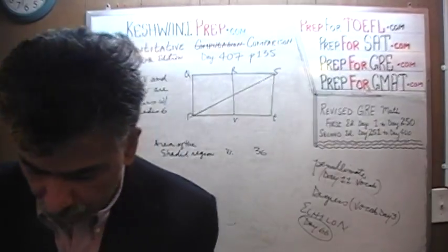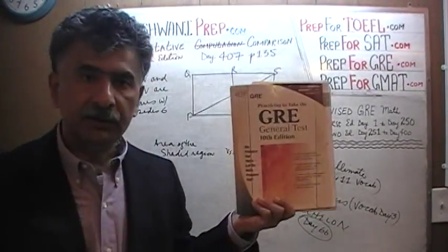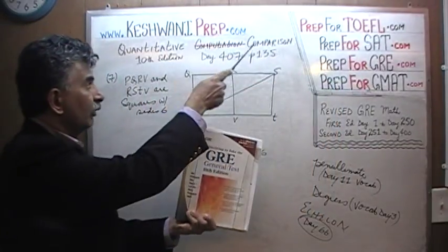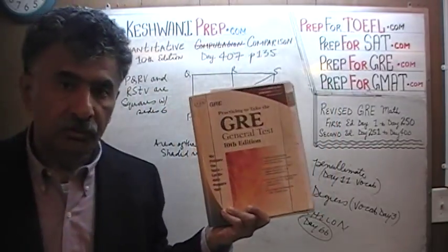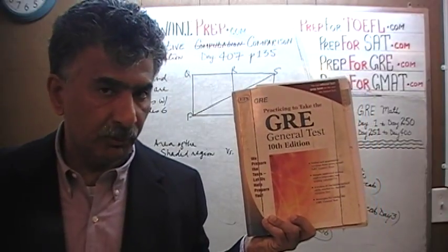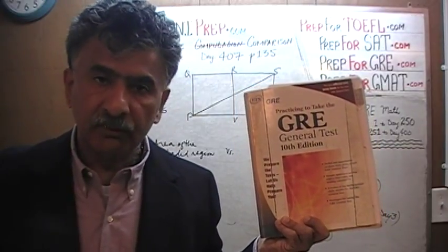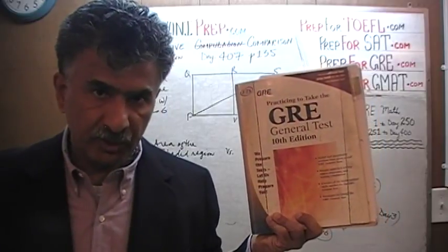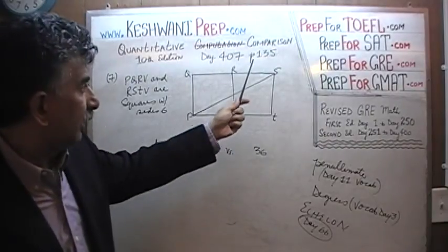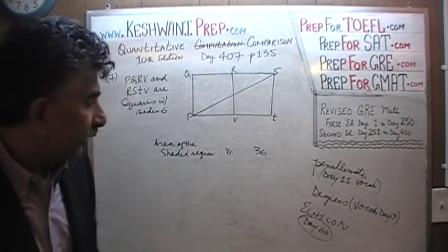Right now, we are solving problems from this book here, the tenth edition of the general GRE. We are solving the quantitative comparison questions because the new books do not contain enough quantitative comparison questions. Quantitative comparison questions are very important; they are still in the exam to get some more practice. We are on page number 135.